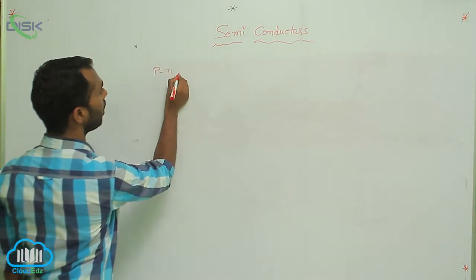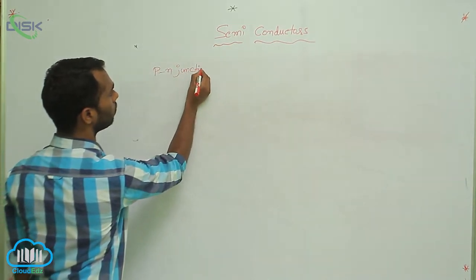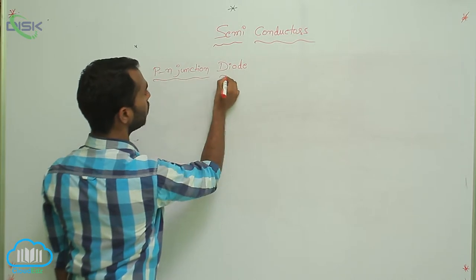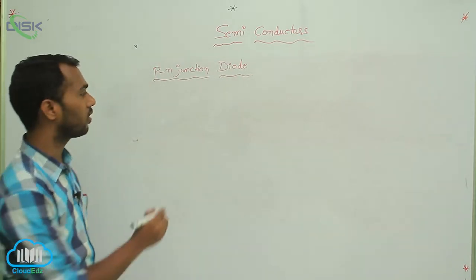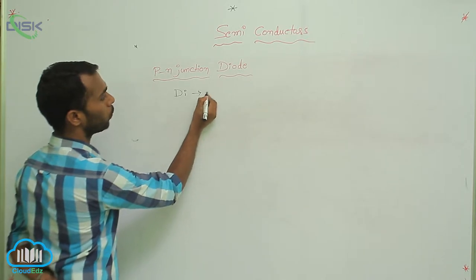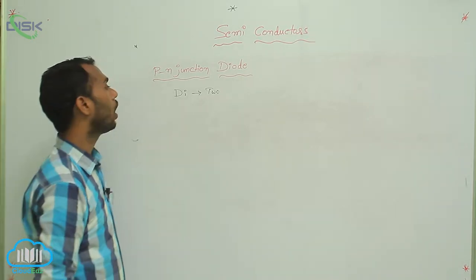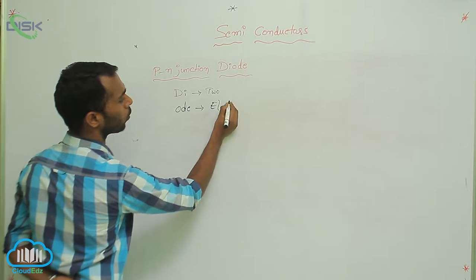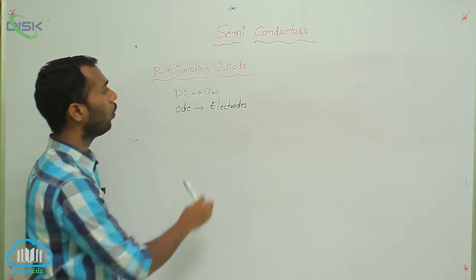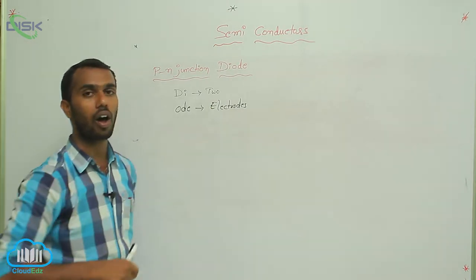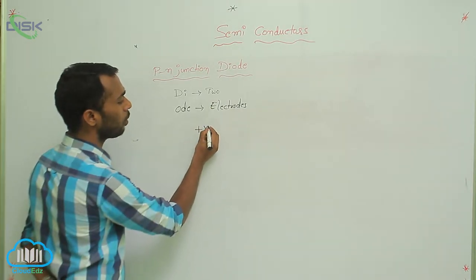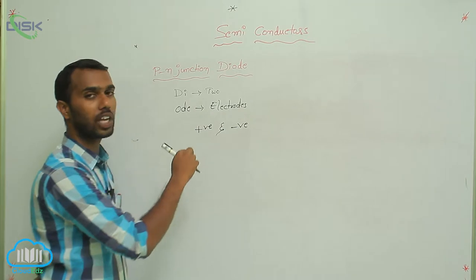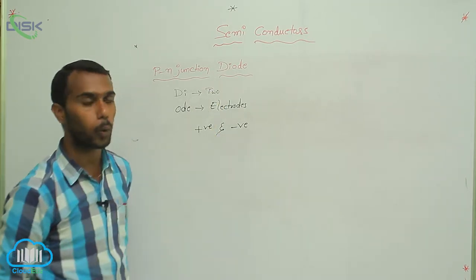Next concept is P-N junction diode. So, junction diode or P-N junction diode — we have to discuss. 'Di' means two, and 'ode' means electrodes. So, diode means two electrodes are there. Two electrodes means one is positive and the next one is negative — that's why it is called a diode. P-N junction diode.